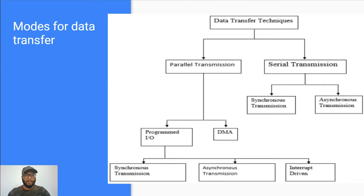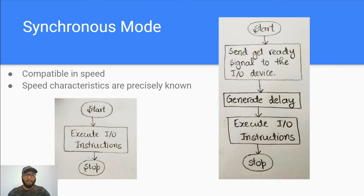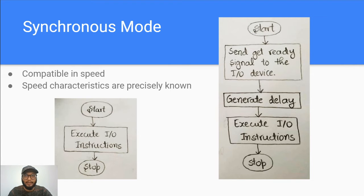Let us start from synchronous mode. The synchronous mode of data transfer can be performed only when the IO device is compatible in speed, or as in the case of memory devices, if the speed characteristic is precisely known. In the first case, we simply execute the IO instruction to transfer the data. Whenever the device is not compatible in speed but the speed characteristic is precisely known, we send a get ready signal — usually the address and chip select signal for that IO device. Since the device is slow but its timing is known, we generate a delay until the device is ready.